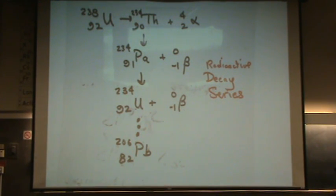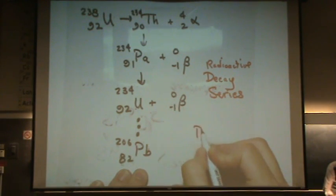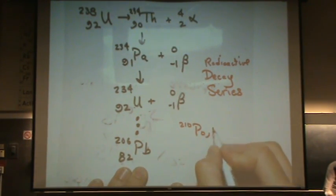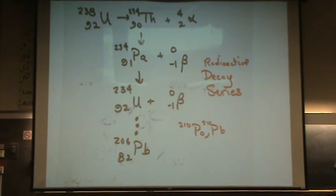Part of this process here, as we're going through this process, we'll make a couple interesting isotopes: polonium-210 and lead-210. Those are still radioactive isotopes in this decay series. Something that's interesting is that these isotopes are also found in cigarette smoke.